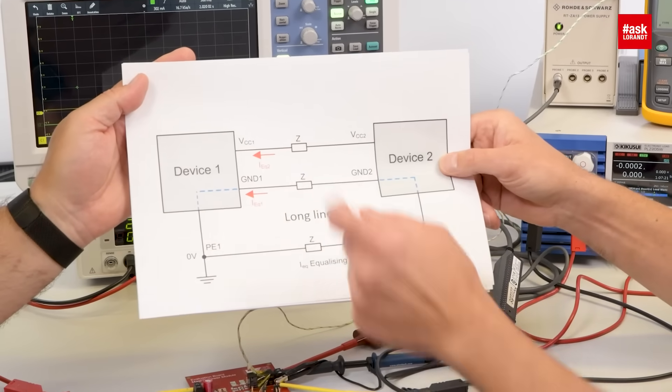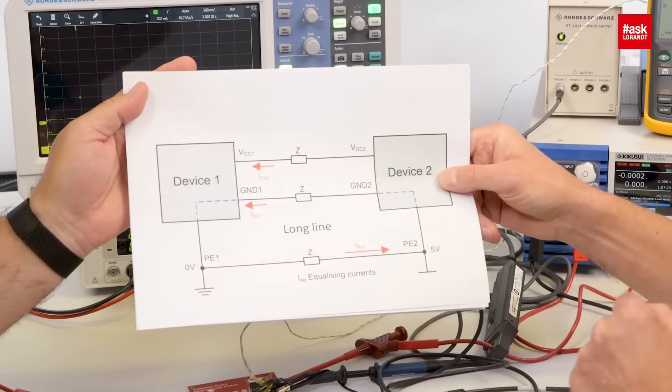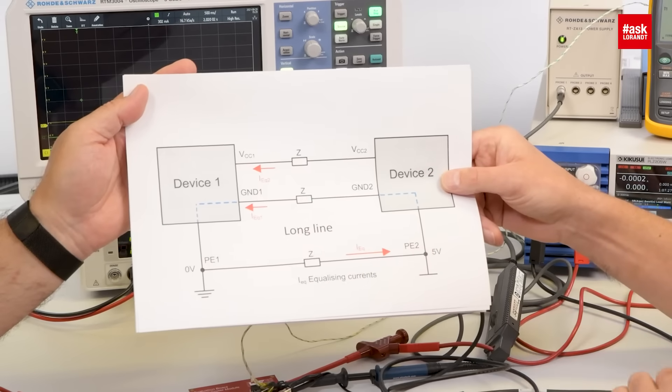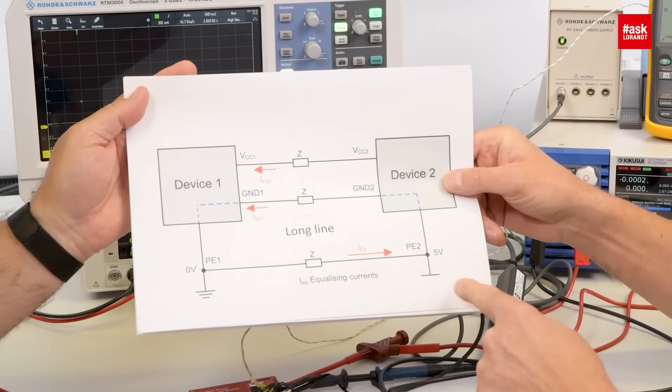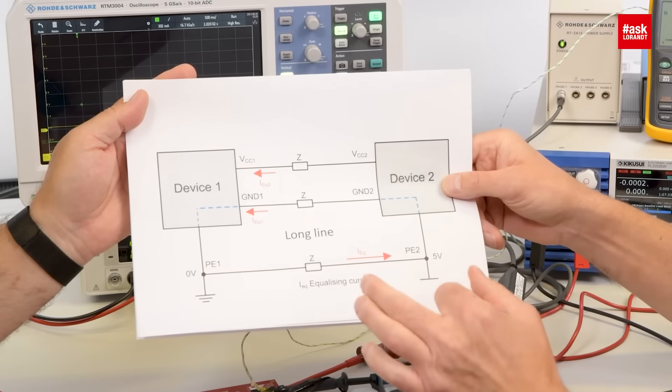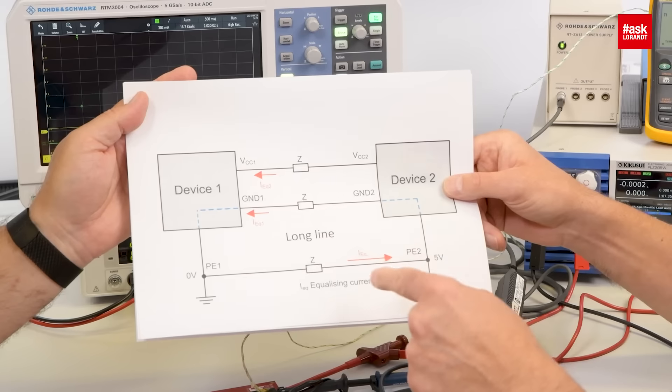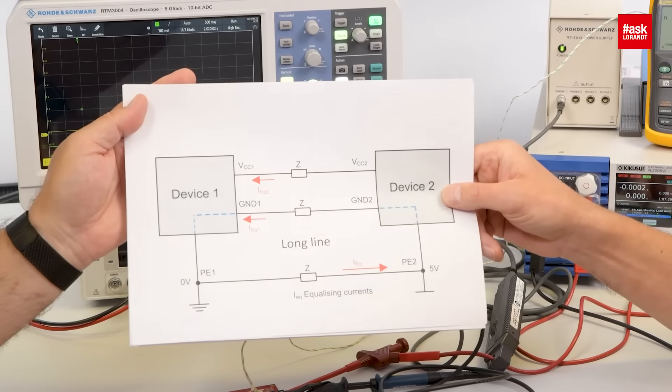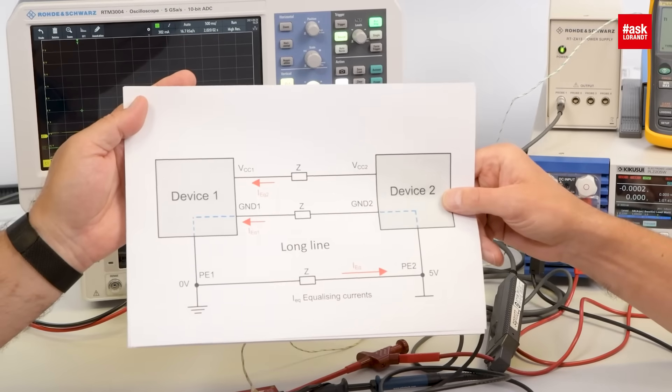If you have got device 1 and device 2 and all the ground potentials are here separated by a long cable, you will have an impedance there. And if you have got different potentials and an impedance, a resulting equalizing current will flow. This is why your data communication is disturbed.